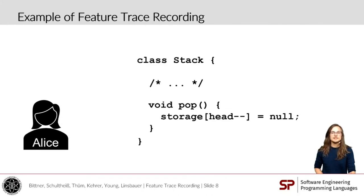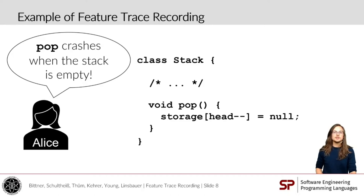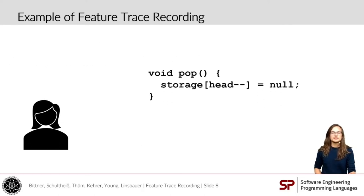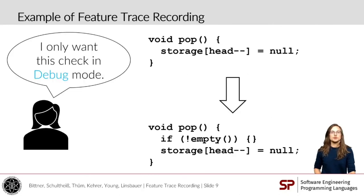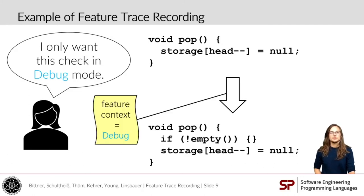So consider Alice. Alice is developing the pop method of a class stack, and she realizes there's a bug — the pop method crashes when the stack is empty. To fix that bug, she first inserts a condition that checks whether the stack is empty, and for the code to be as fast as possible, she wants the stack check to only be present in debug mode. So she can specify debug as the Feature Context of her edit, and the Feature Context describes the feature she's currently editing. From the Feature Context, we can derive the feature of the edited source code. In this case, we know that the inserted line should belong to Feature Debug.